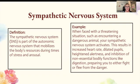The sympathetic nervous system (the SNS) is part of the autonomic nervous system and mobilizes the body's resources during times of stress and arousal. When you're faced with a threatening situation, such as encountering a dangerous animal, your sympathetic nervous system activates. This results in increased heart rate, dilated pupils, heightened alertness, and inhibition of non-essential bodily functions like digestion. It prepares you to either fight or flee from the danger.